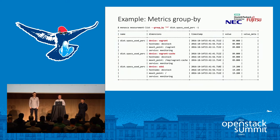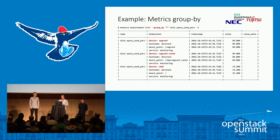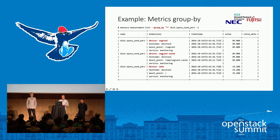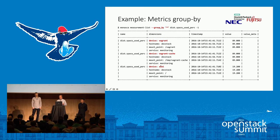At the command line, the group-by syntax uses an asterisk as a wildcard for grouping all metrics. You can also group by dimensions such as service or device. For example, for the disk space used percent metric over the last minute, three metrics are returned — all named disk space used percent but with different devices: vagrant, vagrant cache, and SDA. Each returns three measurements per metric. In a Grafana dashboard, you now query once and get multiple time series arrays back.